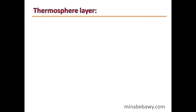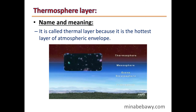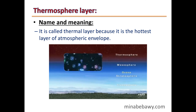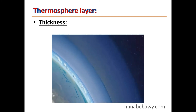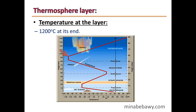The fourth layer is the Thermosphere. It is called Thermosphere because it is the hottest layer of the atmospheric envelope. Its thickness is 590 km, and its temperature increases gradually from −90°C up to 1,200°C at its end.